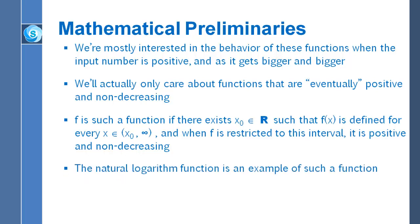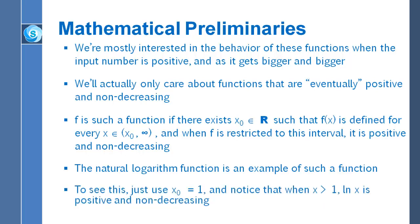The natural log function is a perfect example. If we take x₀ equal to 1, then on the interval from 1 to infinity, as long as x is greater than 1, the natural log of x will be positive — the natural log of anything bigger than 1 is bigger than 0. So this function is positive for inputs x greater than 1. It's also non-decreasing; in fact, the natural log function is always increasing.